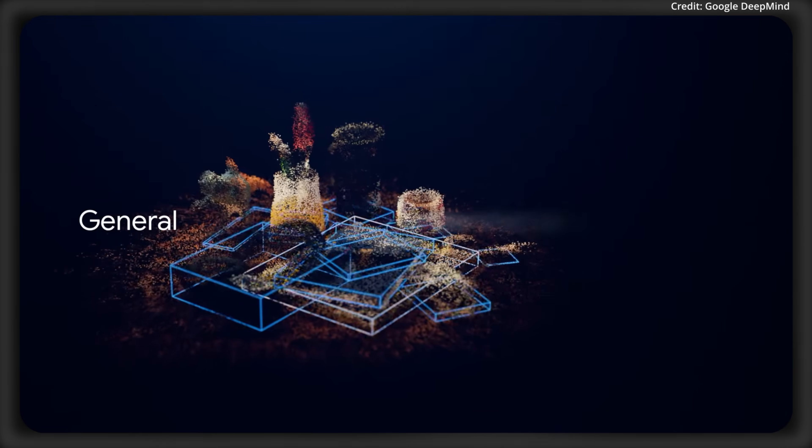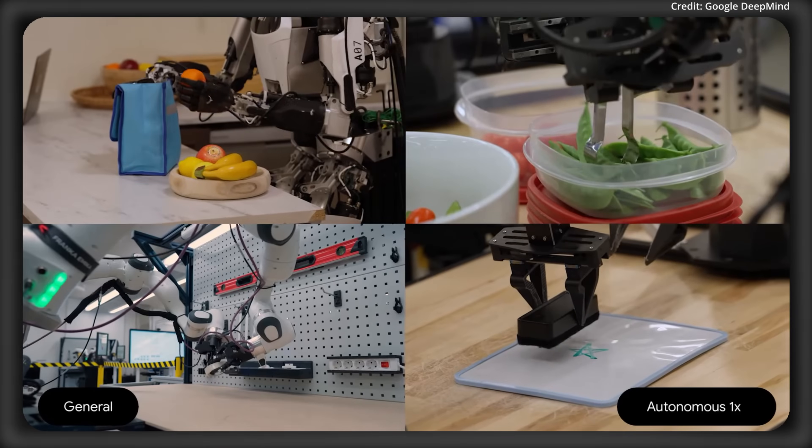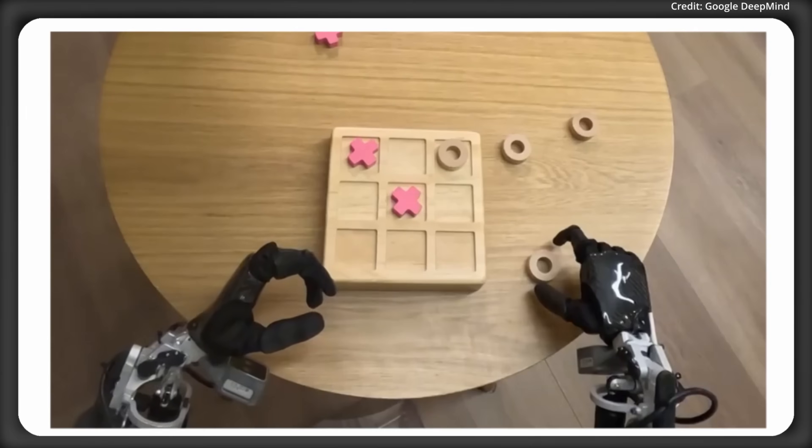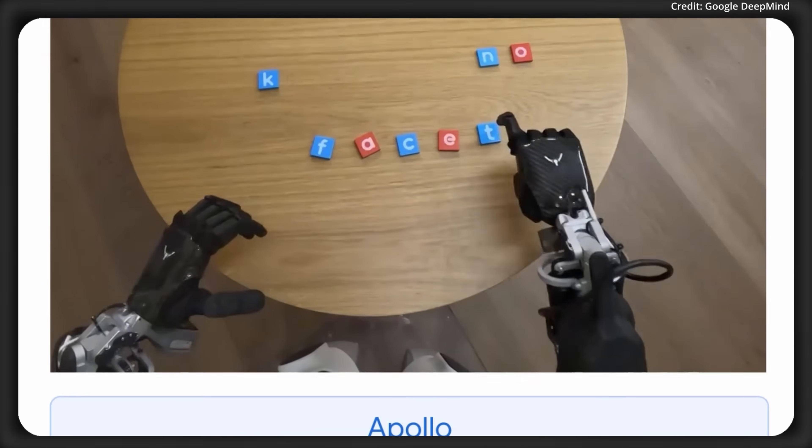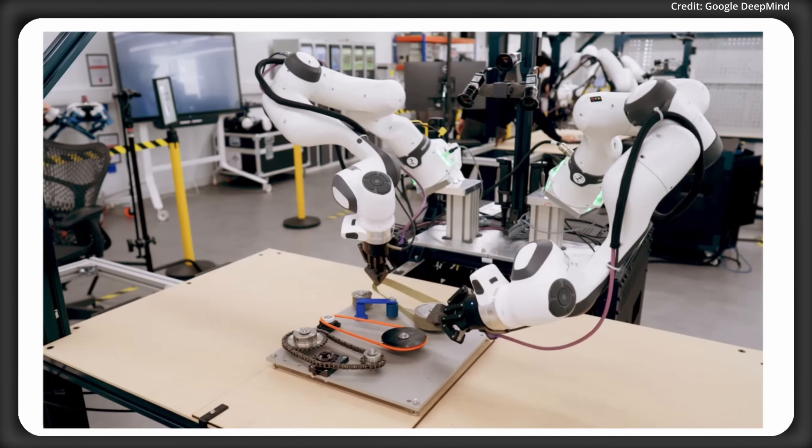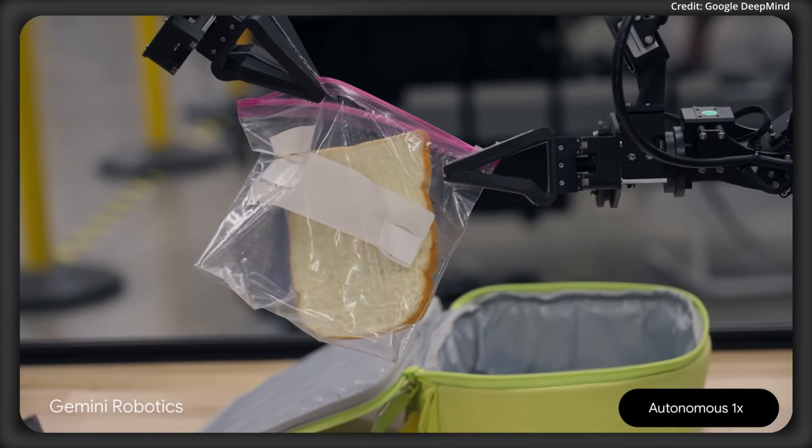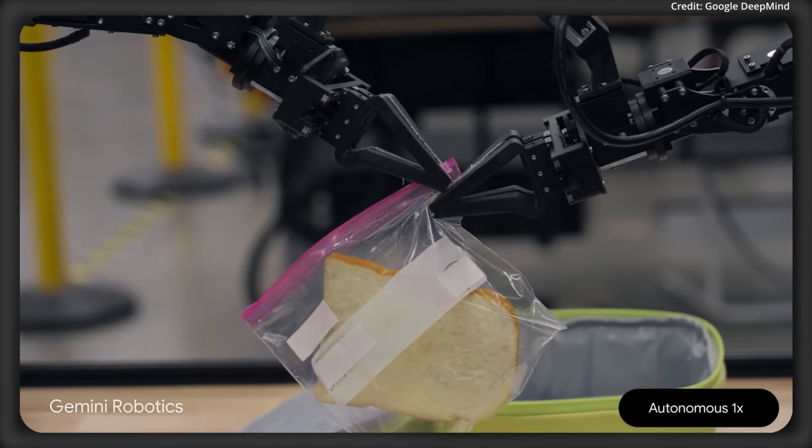So it doesn't know exactly how to do it going into the task, but just by listening to the human tell it what needs to be done, it figures it out as a result. Gemini Robotics is also able to deal with new objects, new instructions, and new environments. In fact, on average, it more than doubles performance on comprehensive generalization benchmarks when compared to other state-of-the-art VLAs.